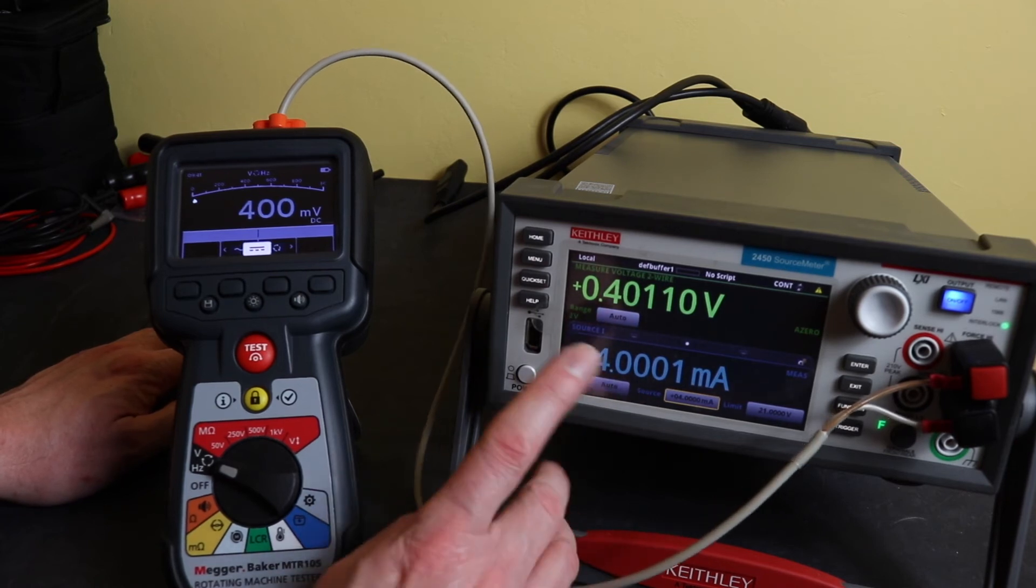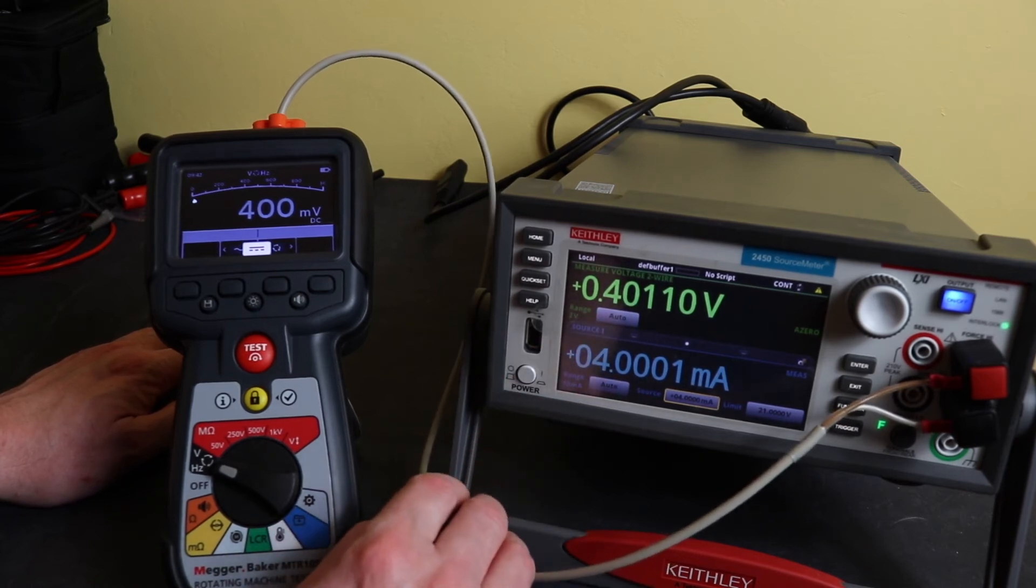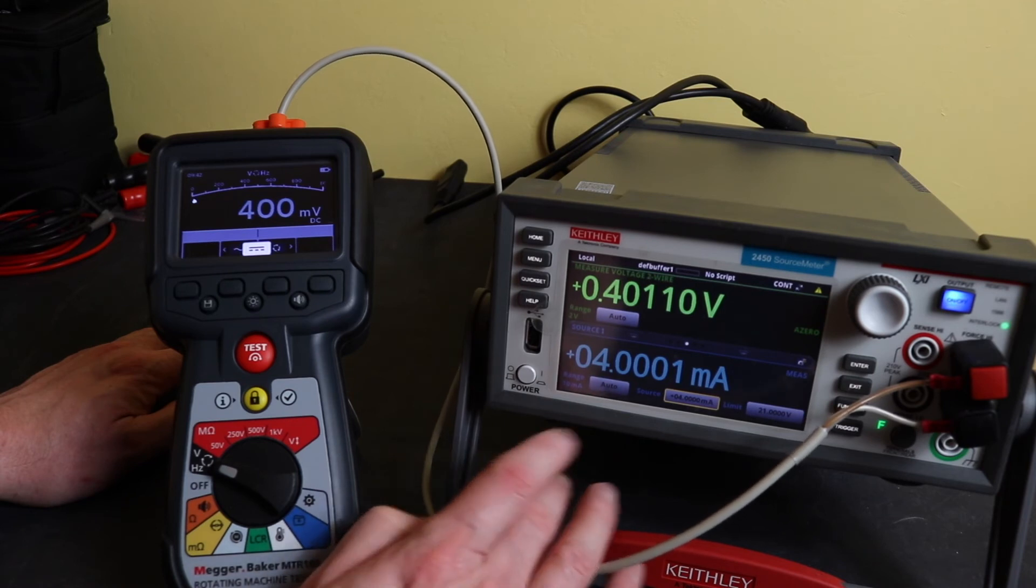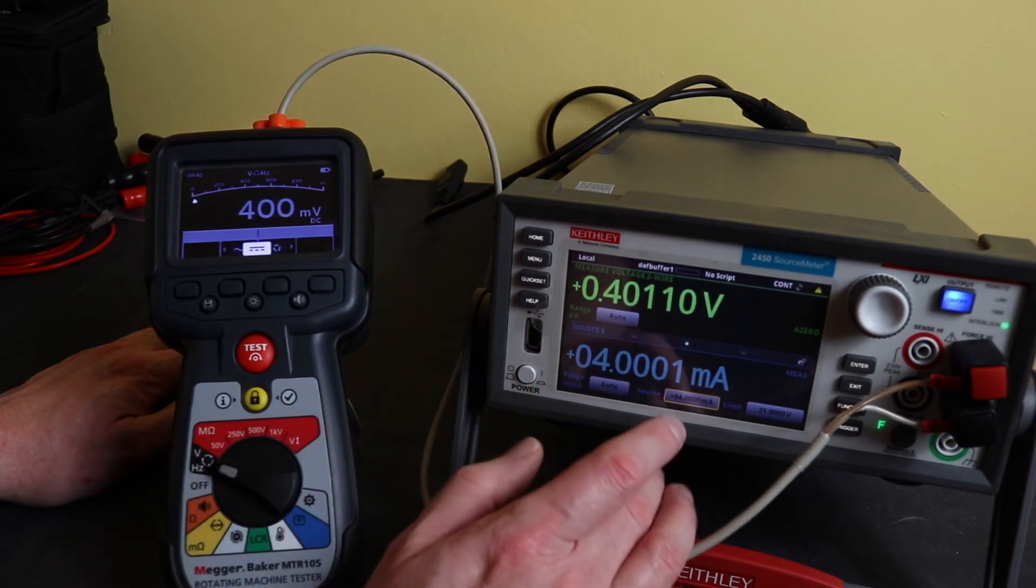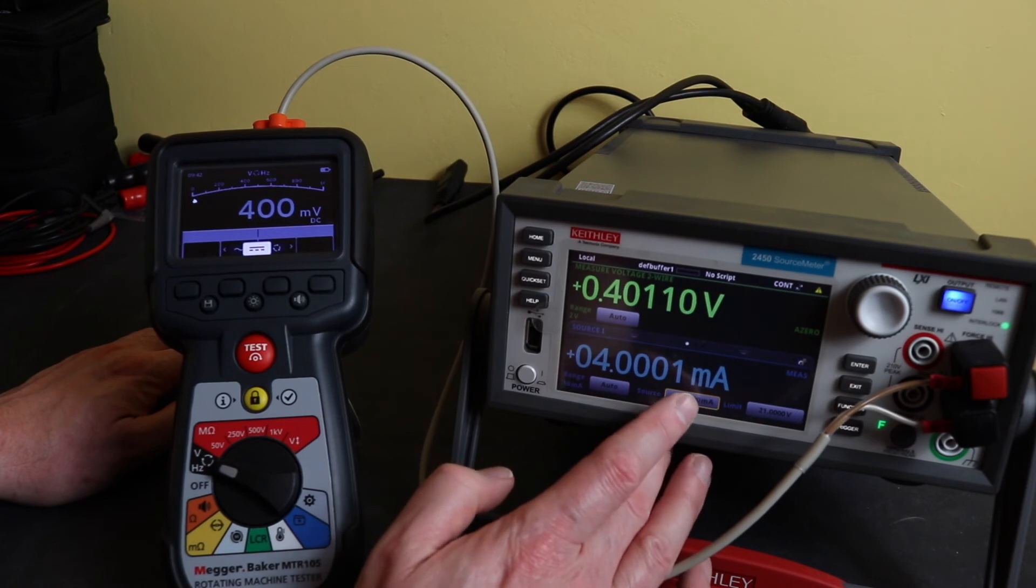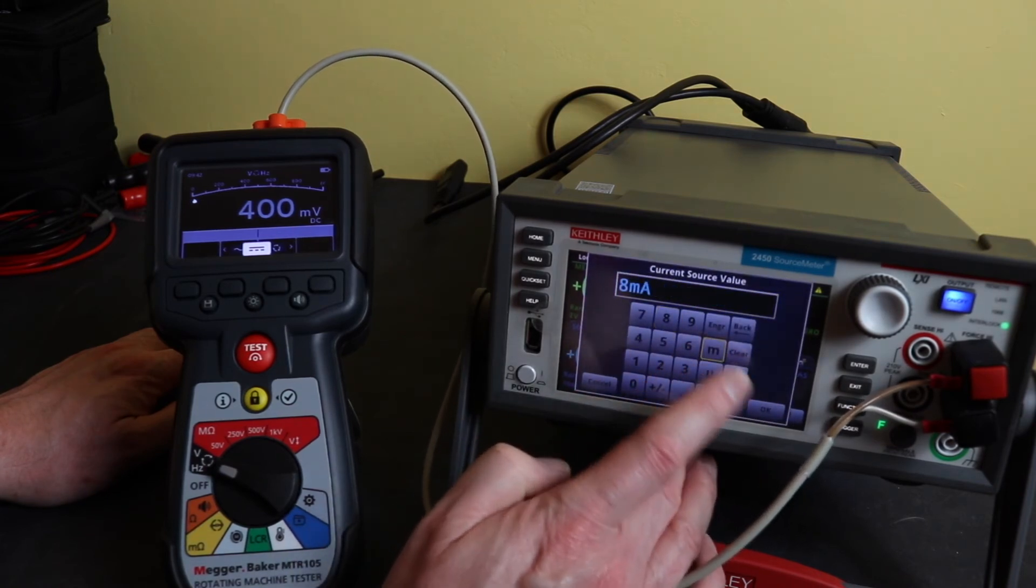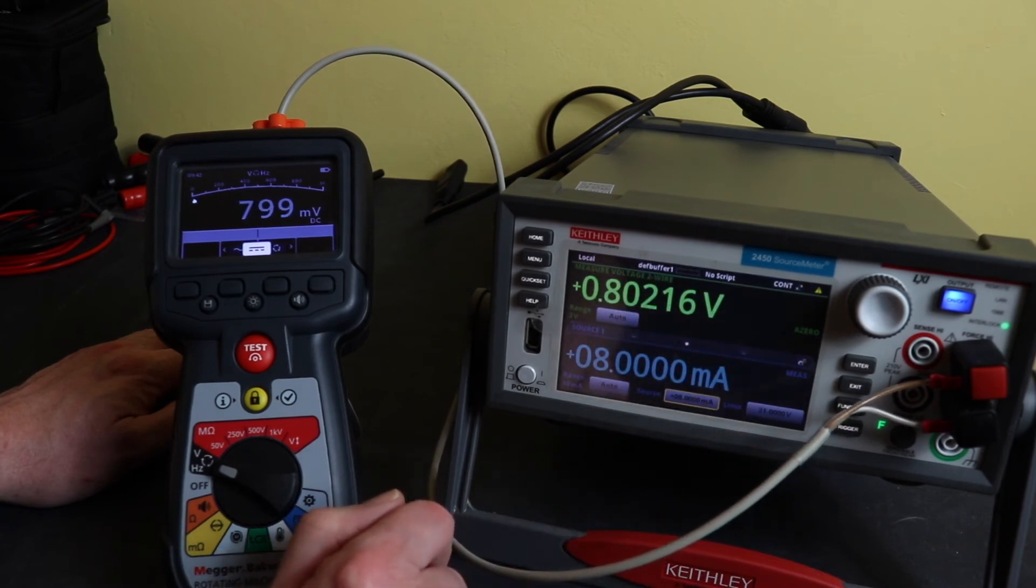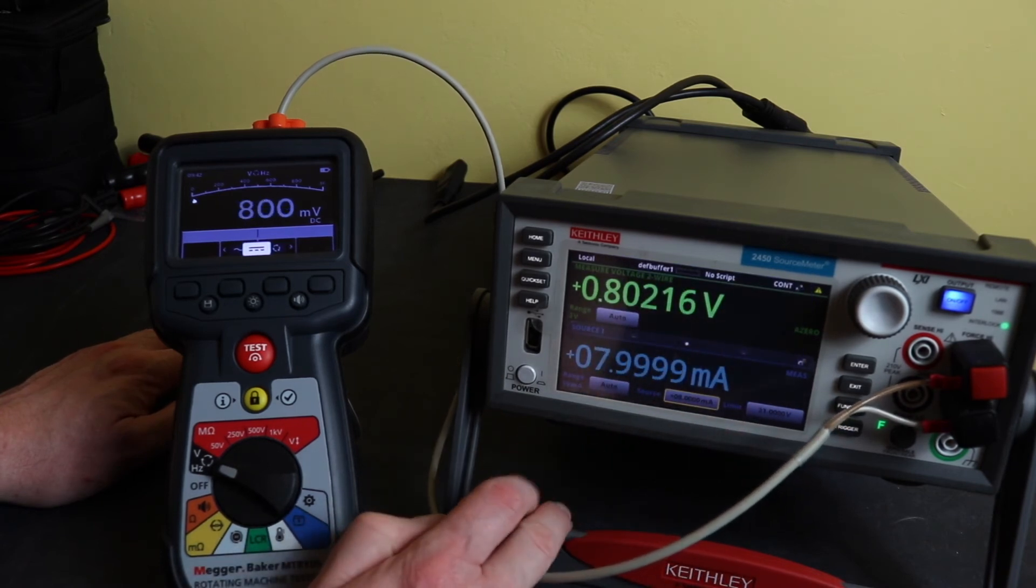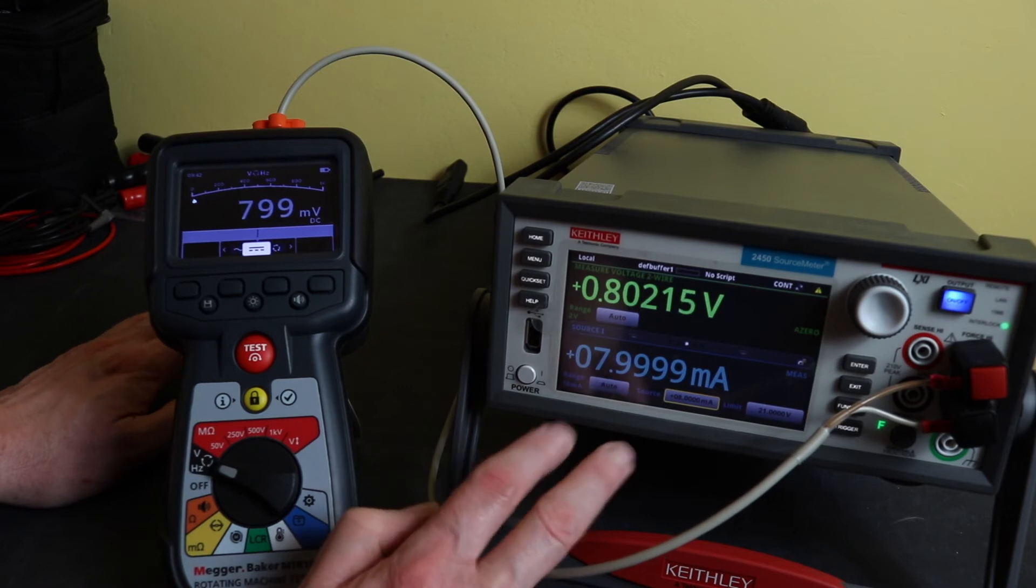And we're all setting it to four milliamps and there we see 400 millivolts so obviously with a 100 ohm resistor that's going to give me my four milliamps of current flow so I just divide it by 100 to get the current but you see the burden is now 0.4 volts so quite a bit higher burden when I'm using this test methodology and we'll go to eight milliamps.